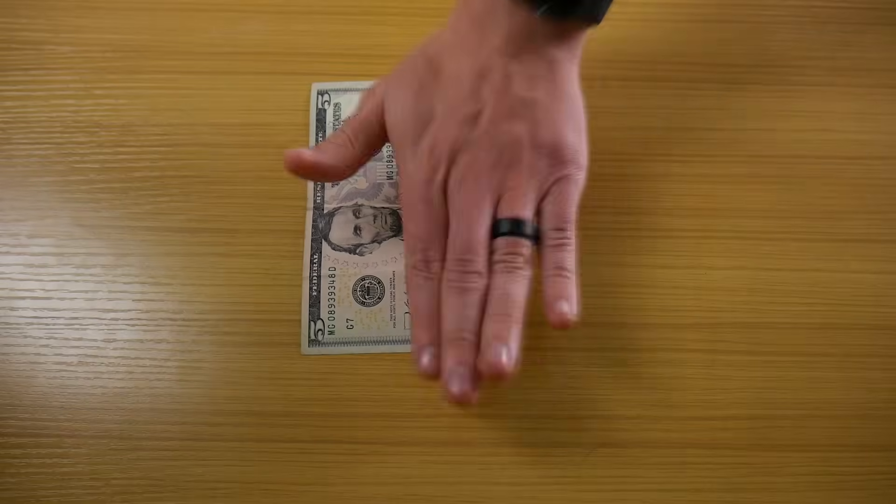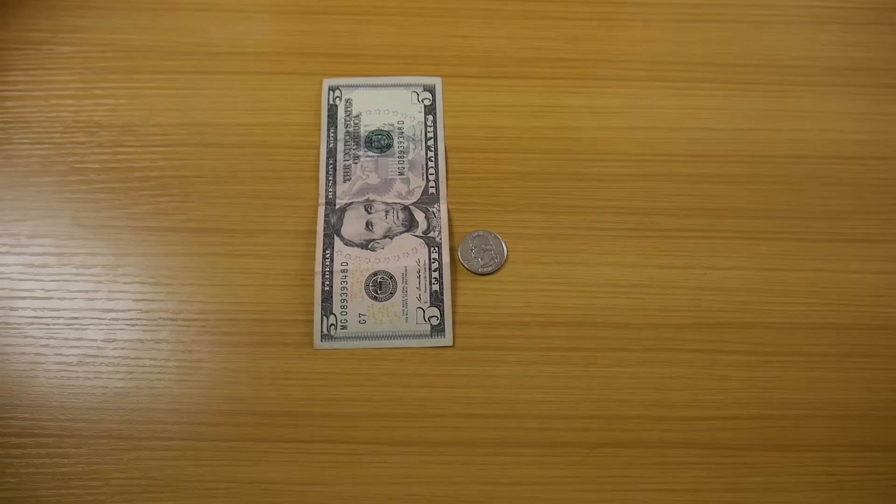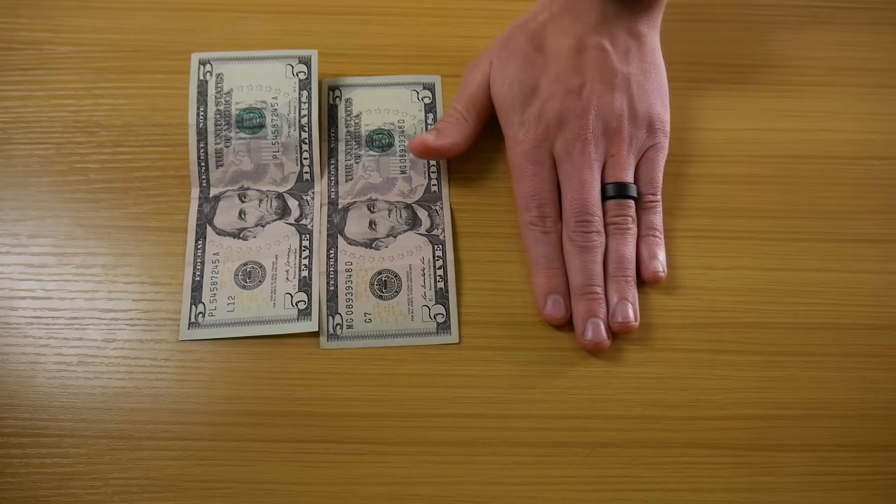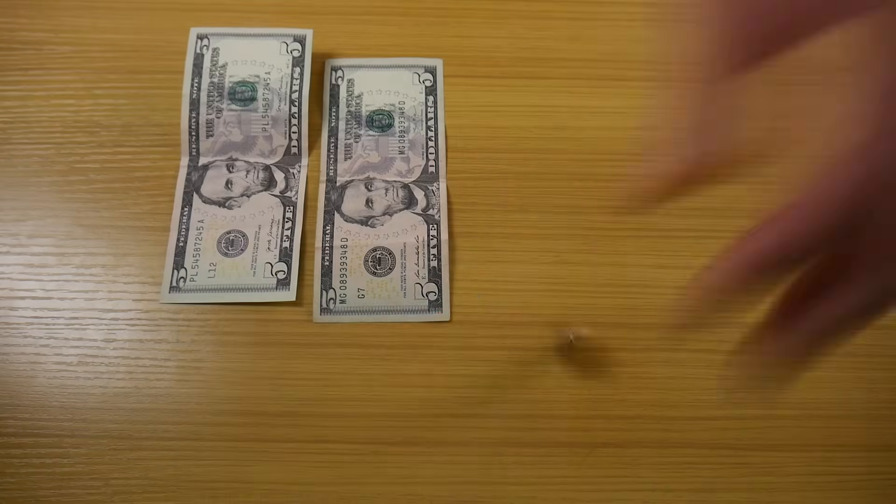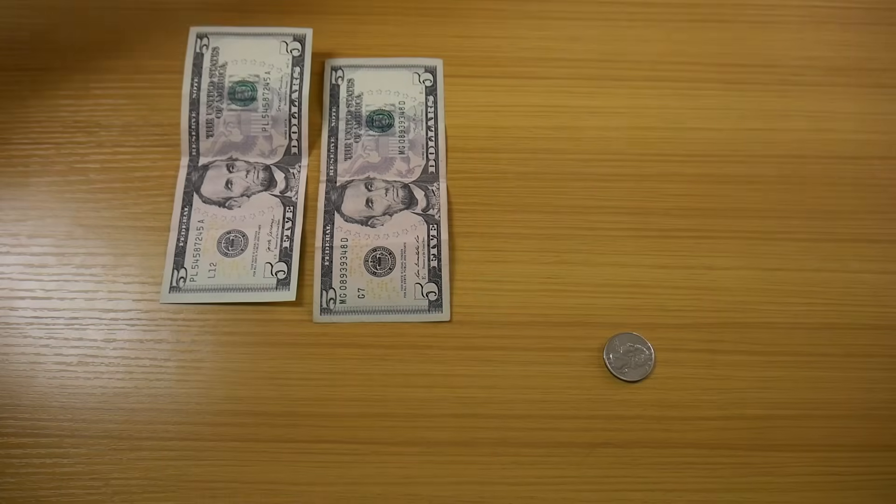If it's heads, we'll double the amount to two dollars and flip again. If the coin lands tails, you get it all. Two dollars. If it's heads again, double the pot again.